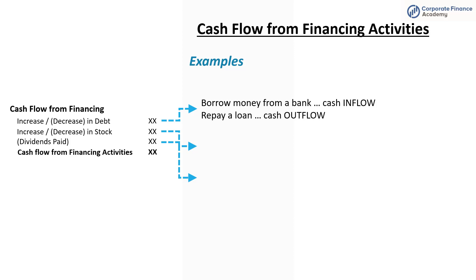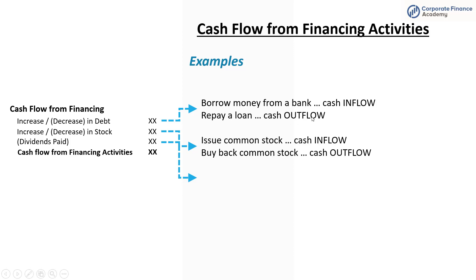A few examples: an increase in debt — borrowing money from a bank — is a cash inflow; paying back a loan is a cash outflow. Issuing common stock brings cash in; buying back stock sends cash out. Paying dividends to shareholders is a cash outflow.